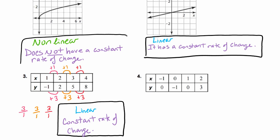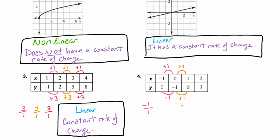Let's take a look at number 4. As we go from x = negative 1 to 0, we go up by 1 in x, and from y = 0 to negative 1, we go down by 1 in y. That gives us a rate of negative 1 over 1. Now from x = 0 to 1, we increase by 1 in x, and from y = negative 1 to 0 we increase by 1, giving us a rate of 1 to 1.